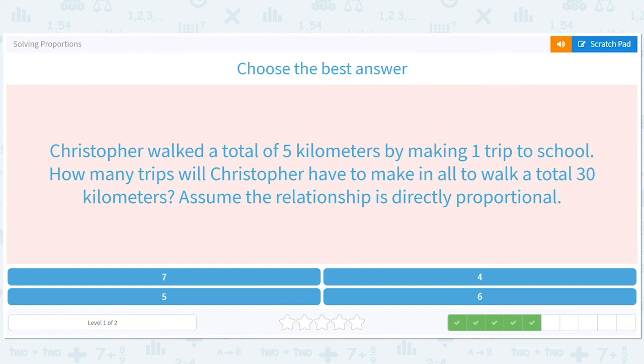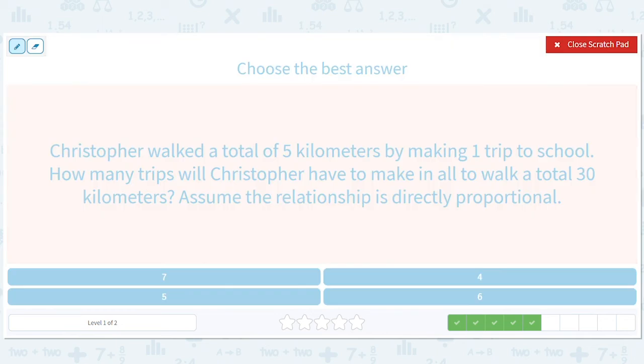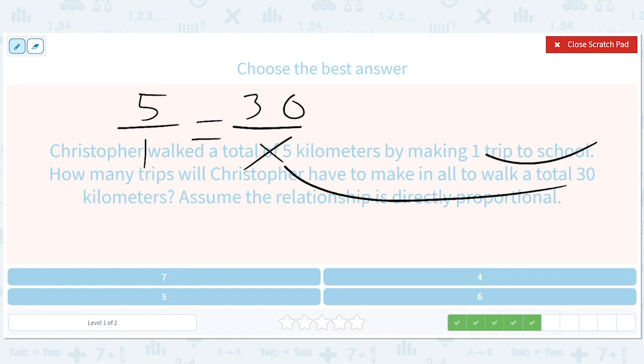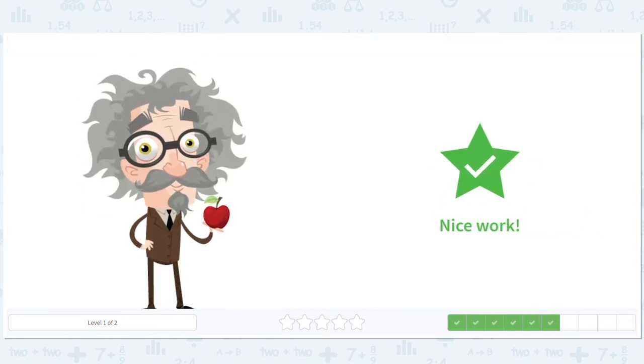Christopher walked a total of five kilometers by making one trip to school. How many trips will Christopher have to make in all to walk a total of 30 kilometers? I mean, another way you can do this is say five times six is 30. So one times six is six. But let's write the equation out. So five kilometers, one trip. 30 kilometers, x trips. Five x equals 30. We get x equals six.